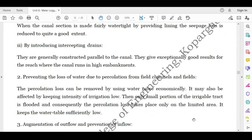Then by introducing intercepting drains. They are generally constructed parallel to the canal. They give exceptionally good result for the reach where the canal runs in high embankments. So these drains are essential for draining the excess water, the flood water, and generally they are constructed parallel to the canal.